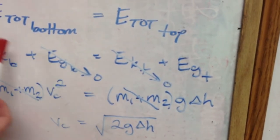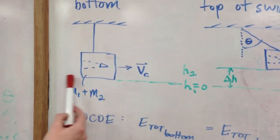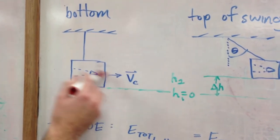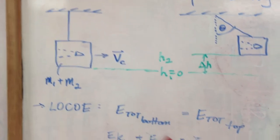The gravitational potential energy of this object is going to be 0 since the height is 0. The equation for gravitational potential energy is mgh. Since h is 0, this term is 0.